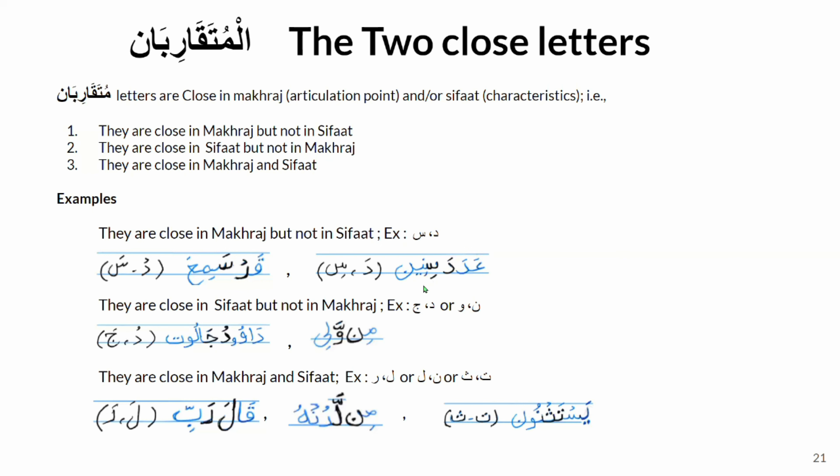The second way is when two letters are close in sifat but not in makhraj, such as letter dal and letter jim. In the example 'wudu jaluta,' letter jim and letter dal are not close in makhraj — jim uses the middle of the tongue while dal comes from the tip. But they share many sifat: they are letters of jahar, shiddah, istifal, and infitah, and when sakin, they are letters of qalqala.